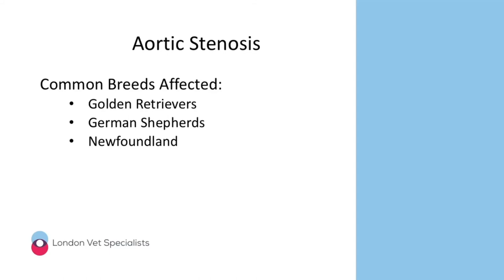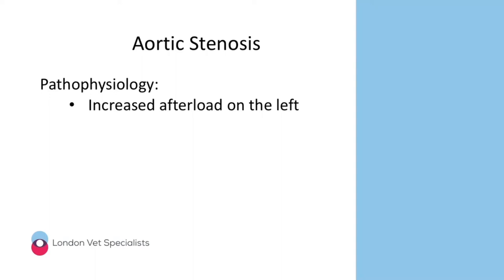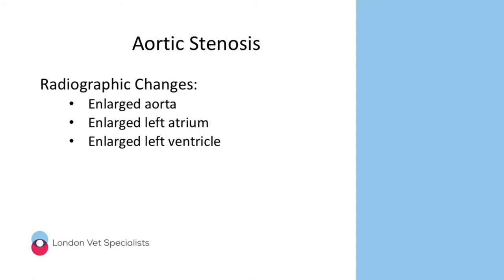Aortic stenosis is less commonly seen in first opinion practice. Breeds to watch include Golden Retrievers, German Shepherds, and Newfoundlands. Aortic stenosis involves a narrowed aortic outflow causing increased afterload on the left side of the heart. On thoracic radiographs we'll see an enlarged aorta, an enlarged left atrium, and an enlarged left ventricle.